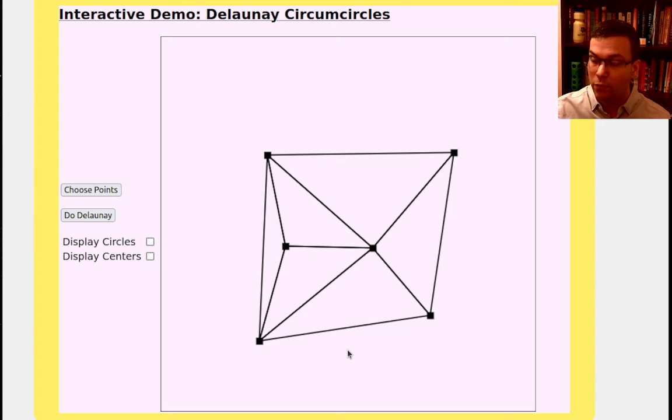It's a way of drawing triangles to connect the points that sort of evenly distributes them. And actually, one thing you can say about it, one of the many nice properties is that it maximizes the minimum angle in any triangle. So they're kind of the most even triangles you could come up with.